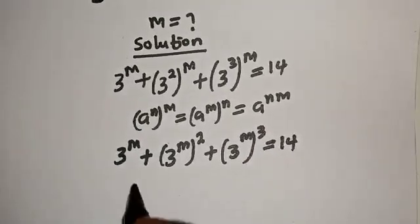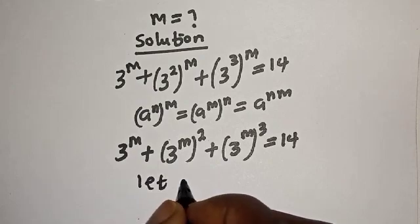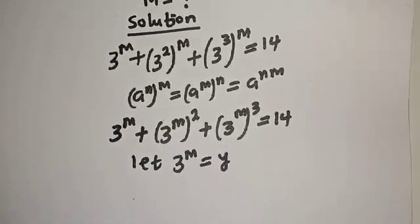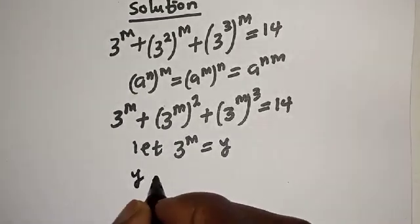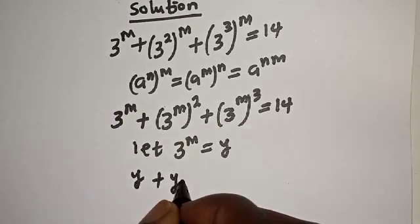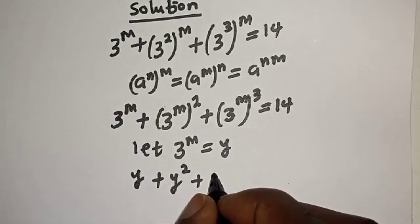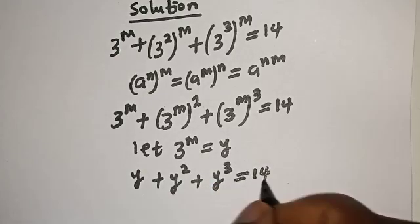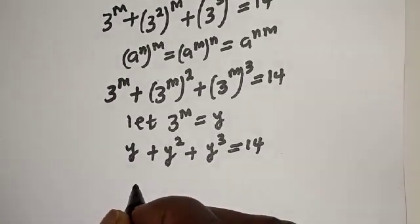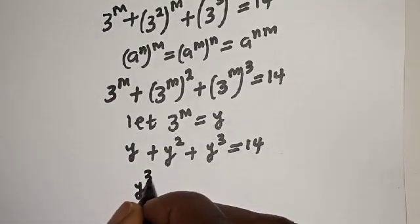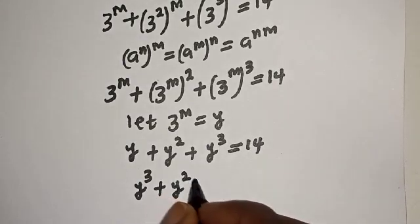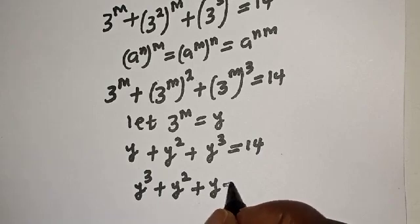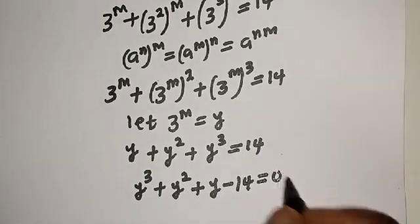Let 3 raised to power m equal y. Then we have y plus y squared plus y cubed equal to 14. Rearranging, we get y cubed plus y squared plus y minus 14 equal to 0.